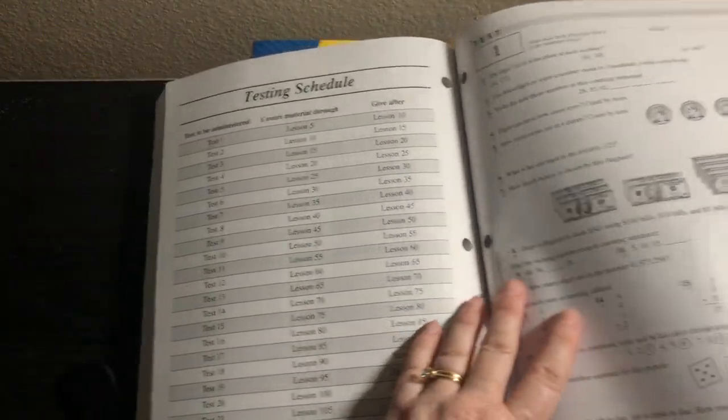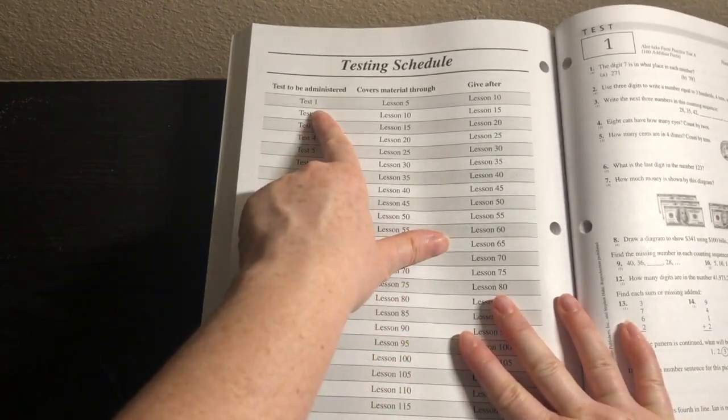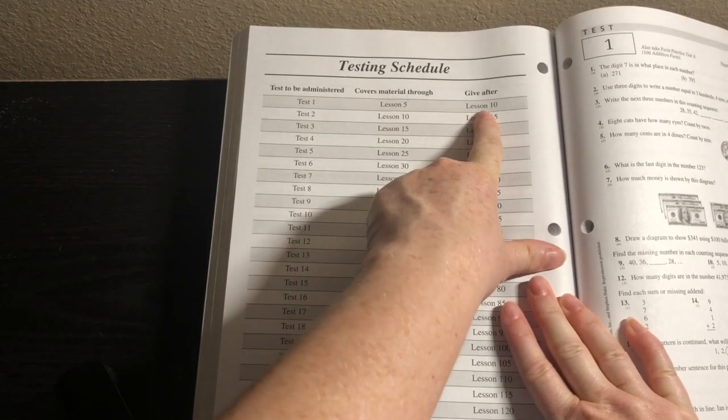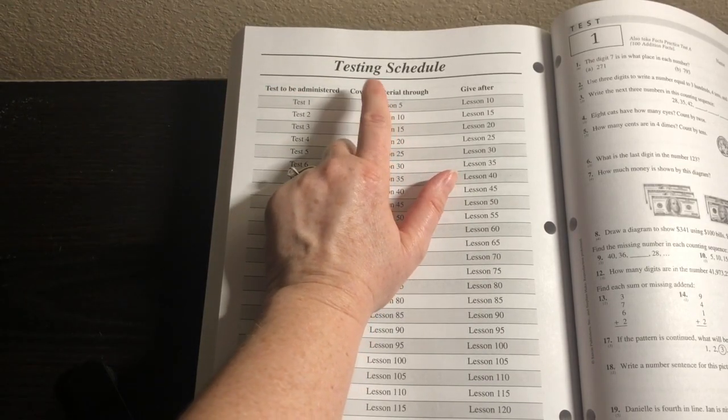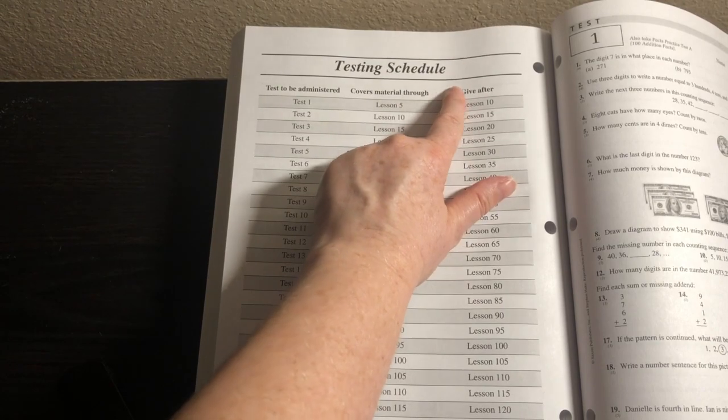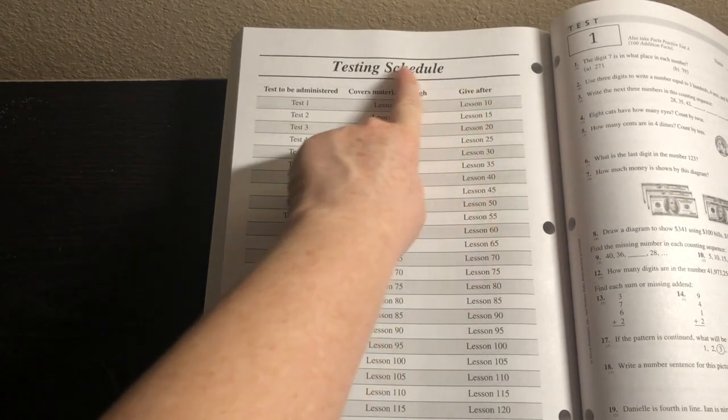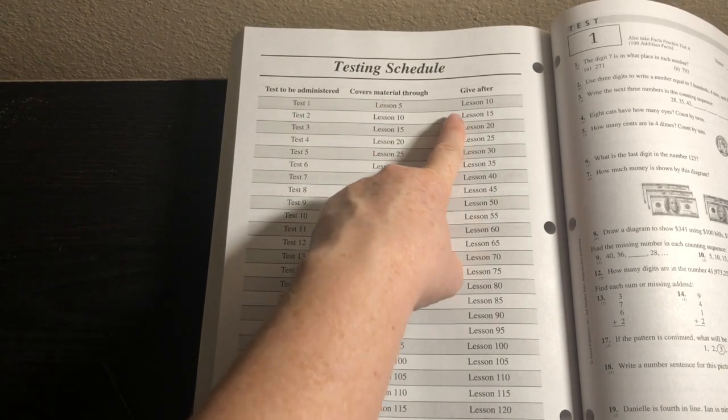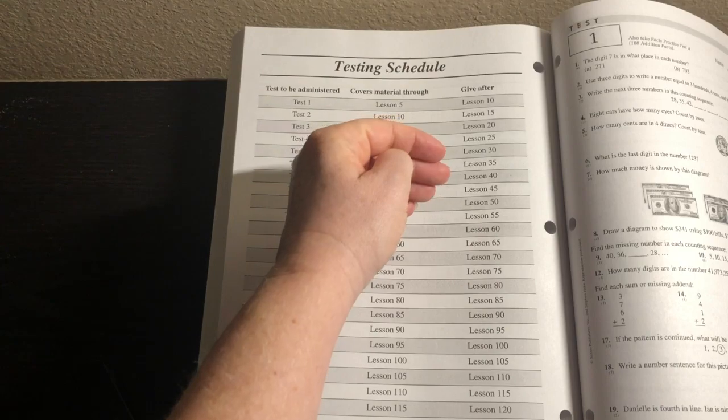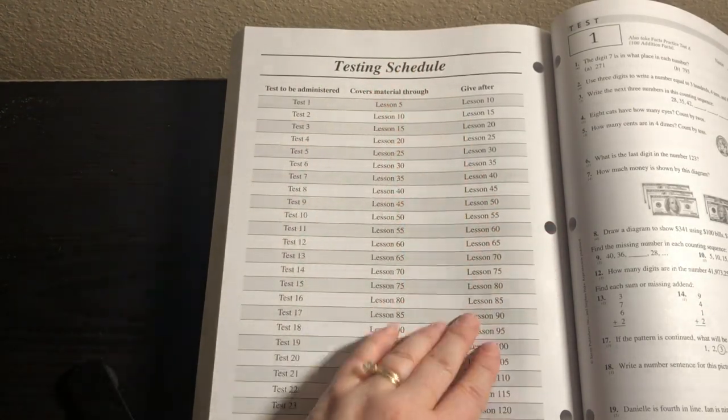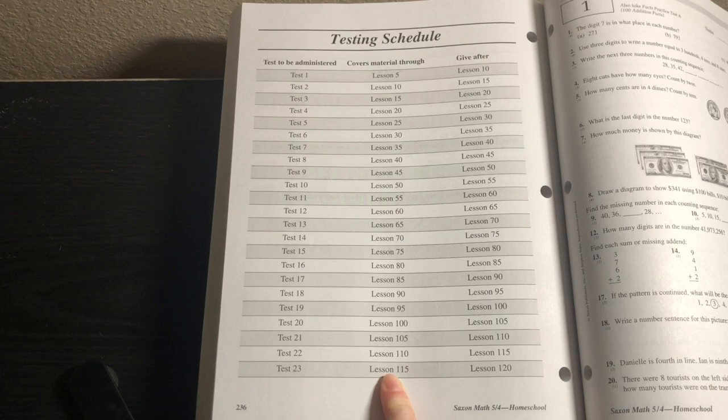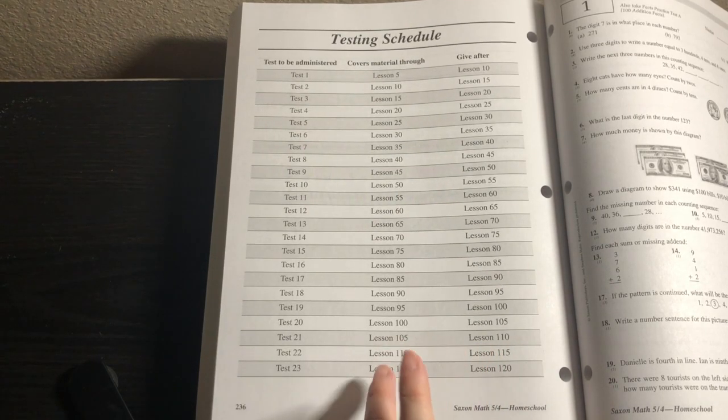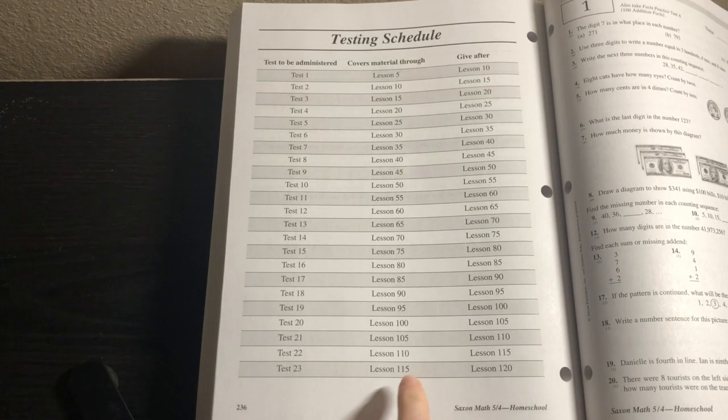Let's look at the tests. The tests are in the back. Here we have a testing schedule. Test one covers material through lesson five and it's given after lesson 10. After that you have every five lessons you have a test. So first 10 lessons then test, then after every five after that. Notice the last test covers material through lesson 115. You give that after lesson 120. So they're not actually tested in the last five lessons of the book, lessons 116 to 120.